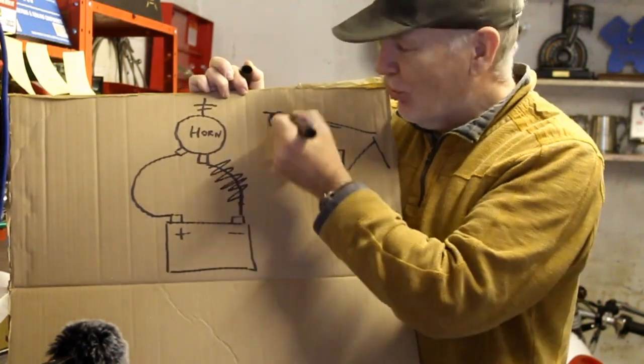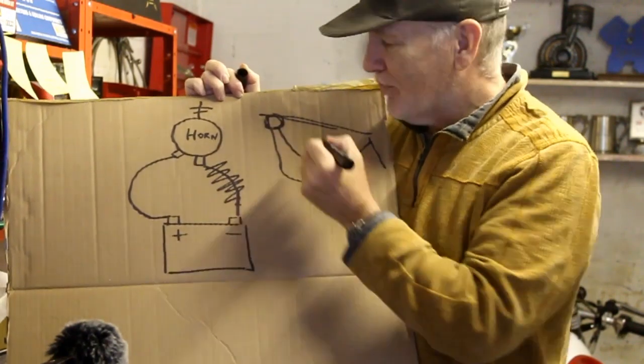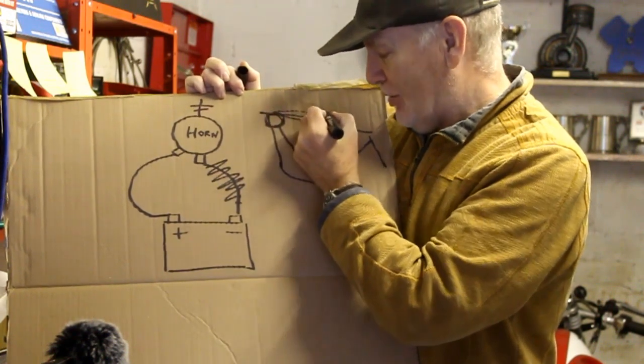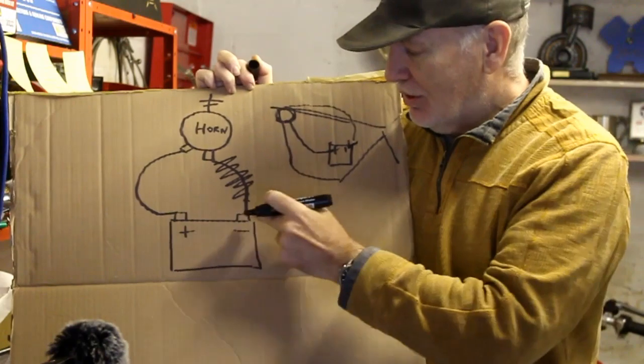So it doesn't need this wire. It simply, if the horn's here and the negative's here, yes we need a wire going to the horn, but no wire coming back because it's bolted in turn to the frame and the frame will allow the current to flow back.